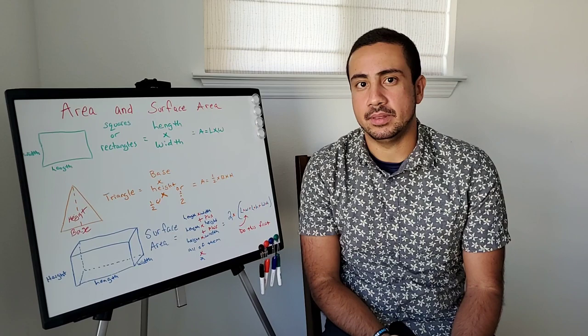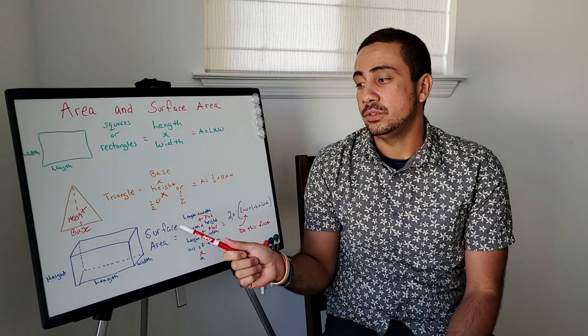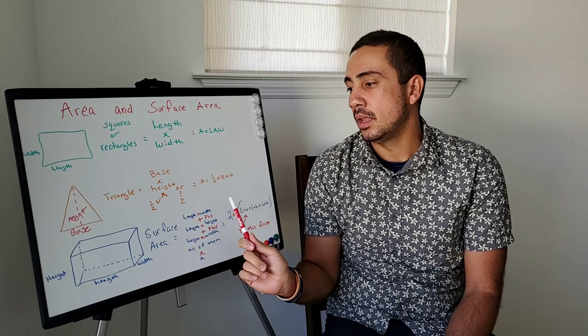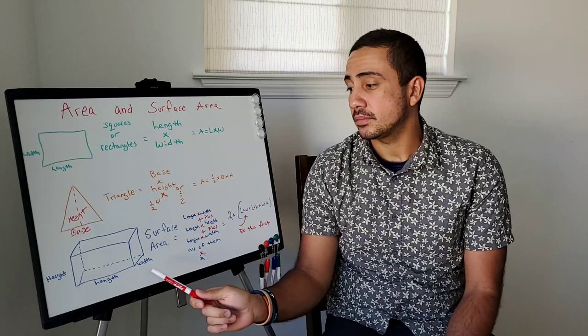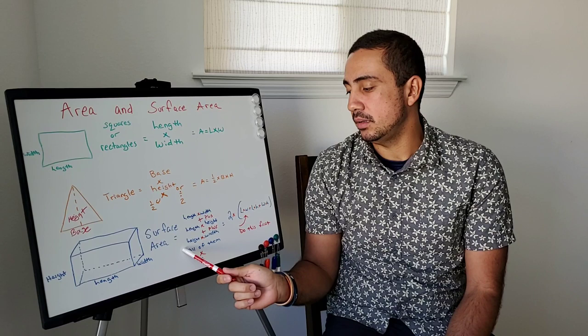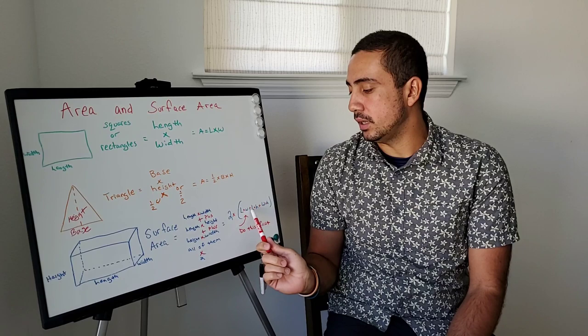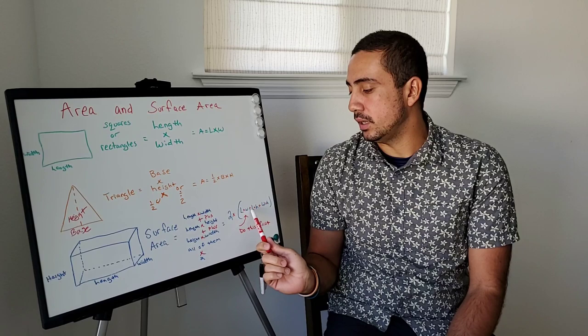Finally, surface area. This is more like a 3D shape type of thing — this is when you're taking into consideration the whole space of an object. You have to do it 3 times: you're going to do length times width, plus length times height, plus width times height. After you add all three answers up, you're going to multiply by 2. Here's the formula — remember, you do the inside of the parentheses first. And every time we're talking about area, the answer is square units.